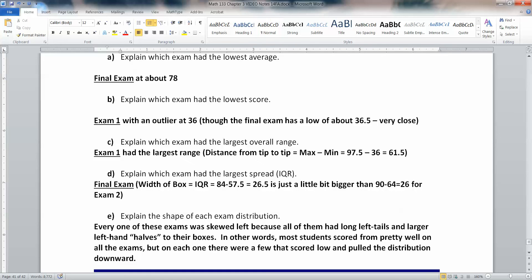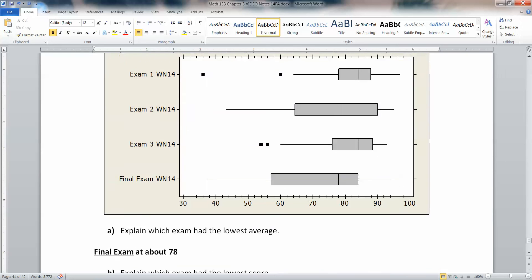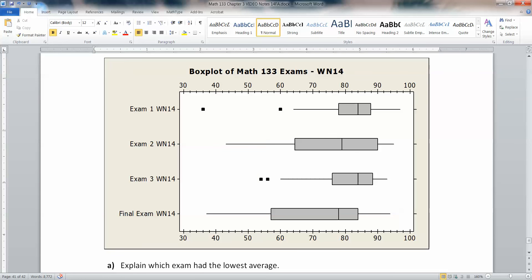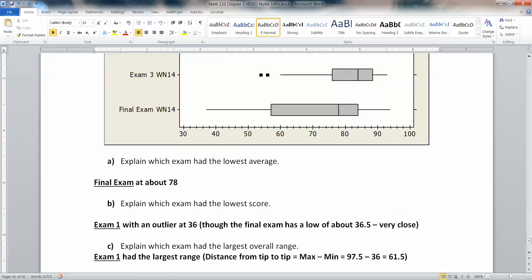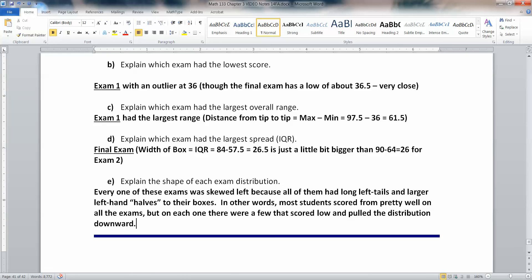And while I'm on the subject, this range here is the distance from tip to tip. And the final exam is the width of the box. Then what's the shape of each of these distributions? Well, every one of them is skewed left. They all have left tails that are longer and left hand boxes that are long. The left hand half of the box is larger, which makes sense. Most students score okay, but you always have a few that are down there at the low end that kind of pull the distribution downward. And that's what I wrote right there.